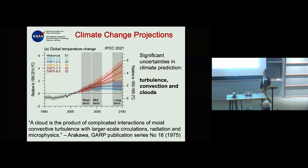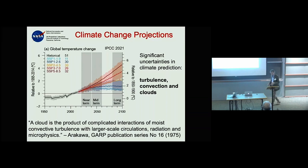Almost 40 years ago, talking about parameterization, he said a cloud is a product of all these different things: turbulence, convection, cloud microphysics, large-scale dynamics, radiation — shortwave and longwave. I'll spend most of the time today talking about the relation between clouds, turbulence, and convection.